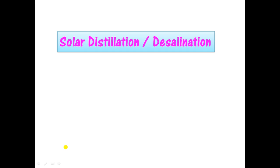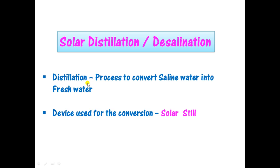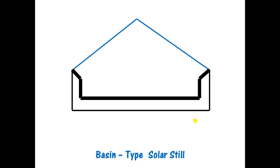Desalination is a process in which saline water is converted into fresh water. When solar energy is used for this process, it is called solar desalination. The device used for solar desalination is called a solar still, and there are many arrangements available for it.